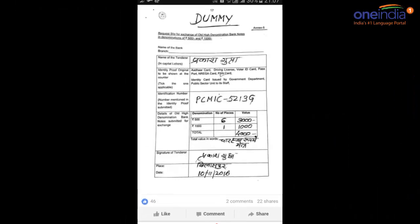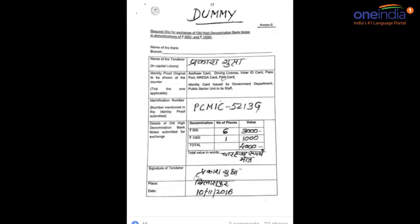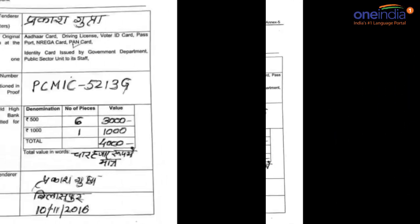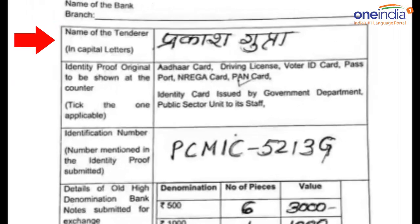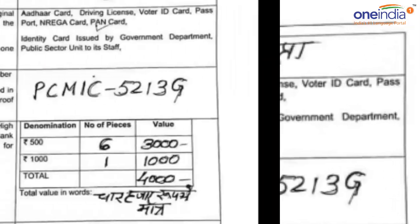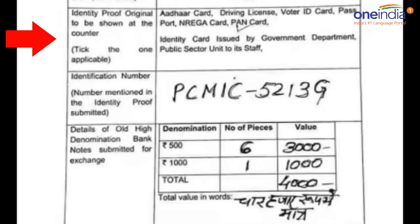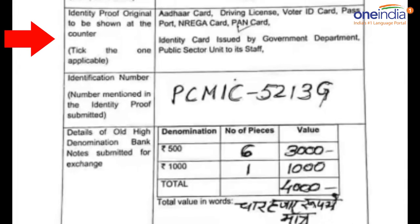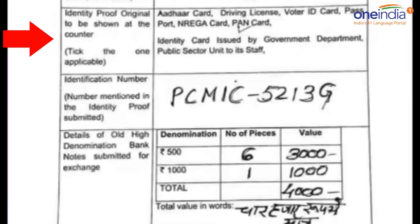Firstly, you have to write the name of the bank and of course the branch where you're submitting it. The first box would be your name — you have to write your name in capital letters, it could be in Hindi or in English. Then the next table is for the identity proof that you are showing to the bank.